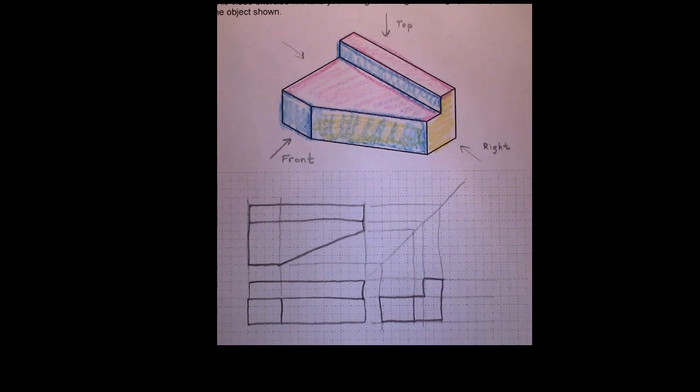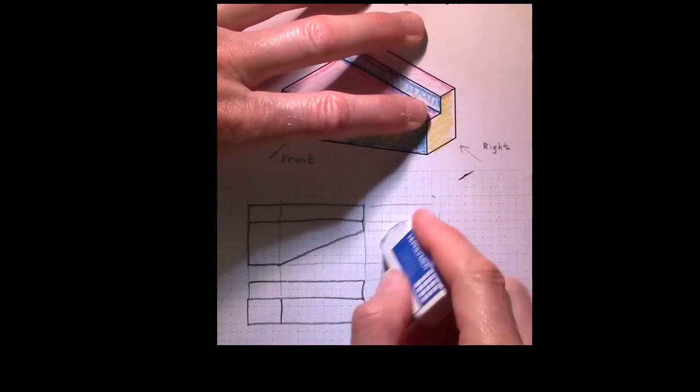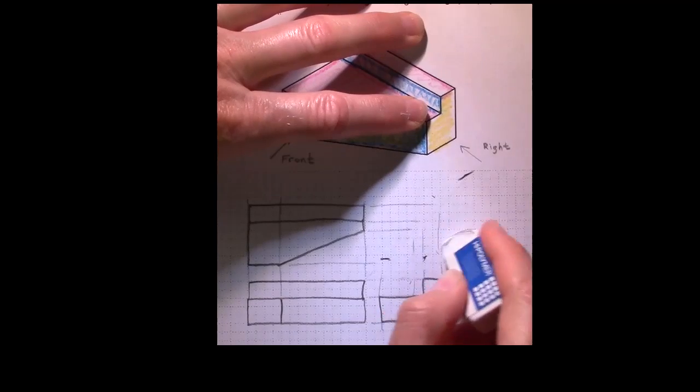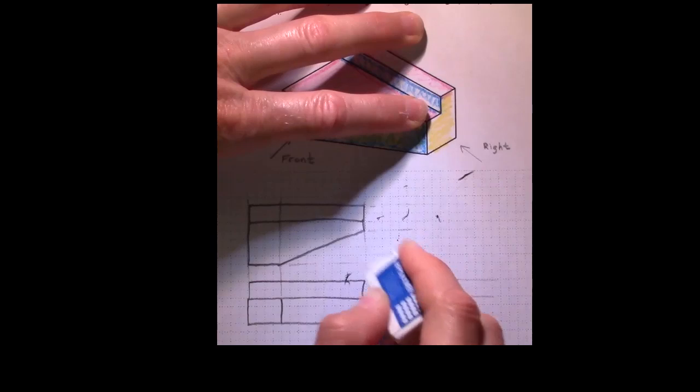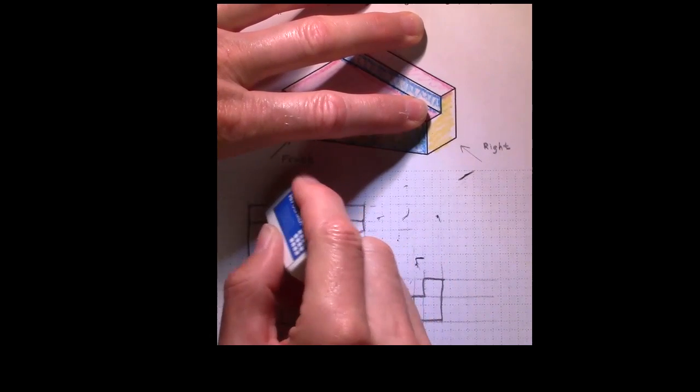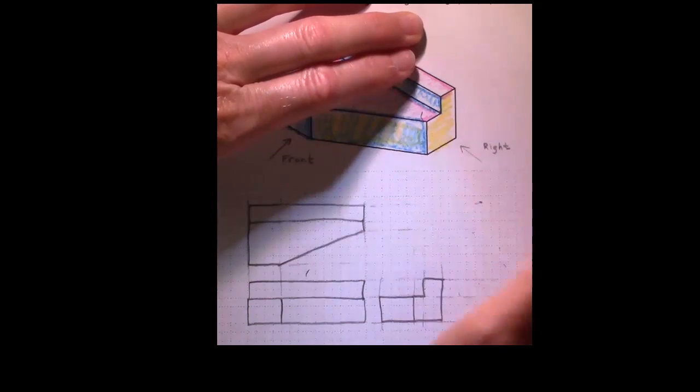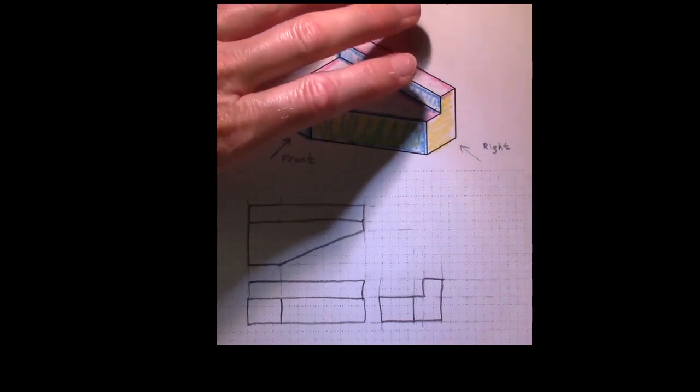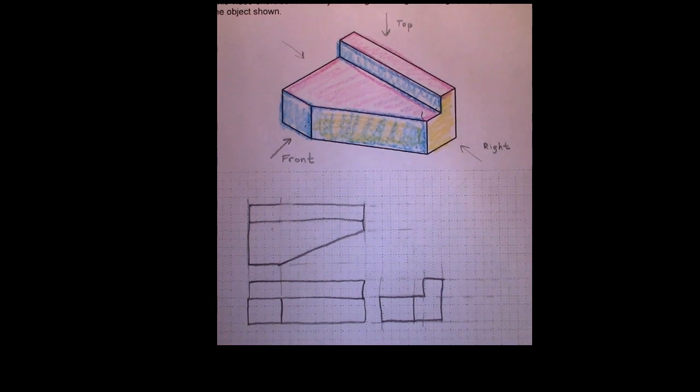The last thing we need to do is to erase our projectors. Or if you're in a CAD program, just turn that layer off so that we don't get confused with what our visible lines are and what our projectors are. My suggestion is when you're sketching these orthographic projections, if you're just beginning, definitely use a pencil because you're going to be erasing a lot.